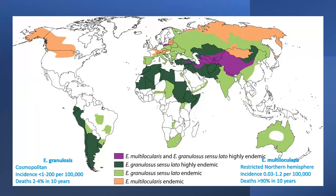Echinococcus granulosus is a cosmopolitan disease, with incidence in endemic regions varying from 1 to 200 per 100,000. In some regions it's highly endemic, up to 200 cases per 100,000. In Kashmir, we have about 60 cases per 100,000. The disease is generally benign, with death rates over 10 to 15 years between two to four percent, occurring particularly when there's a biliary rupture, compression on a vital organ, rupture with anaphylaxis, or when the cyst gets infected.